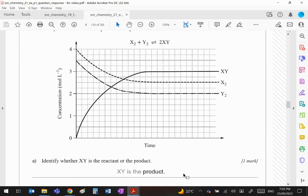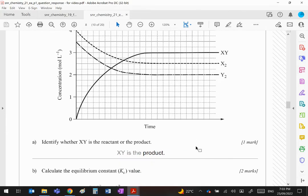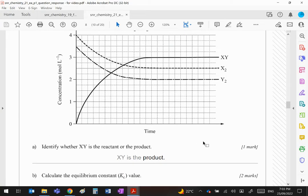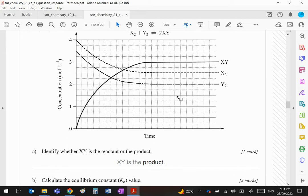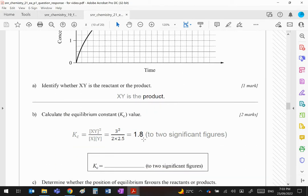So XY obviously is a product. The equilibrium constant: remember you put XY's concentration squared over these concentrations multiplied together. XY would be 3 squared, X2 would be 2.5, Y2 would be 2. So 2 times 2.5 is 5, so we've got 9 over 5 which works out to be 1.8. Now again I've copied this as it was from their answer guide, that 1.8 needs to be in the box there.